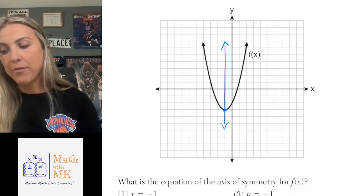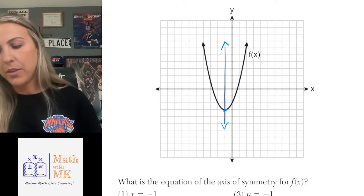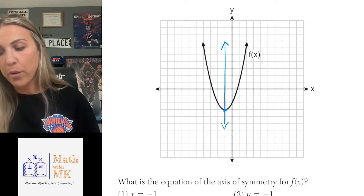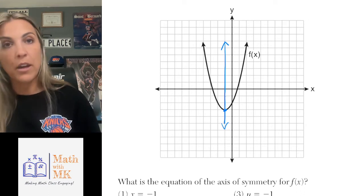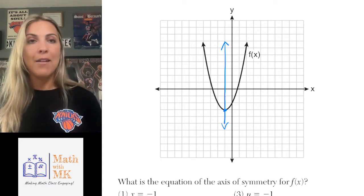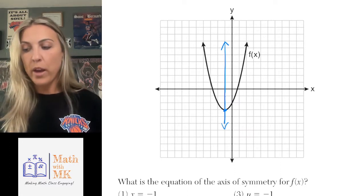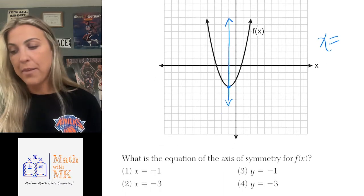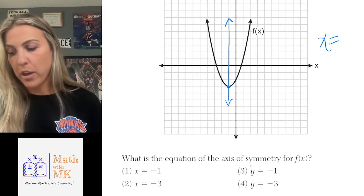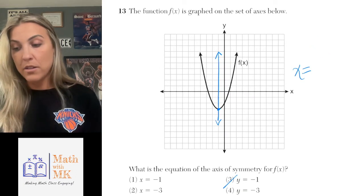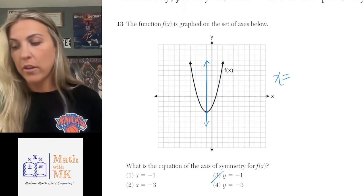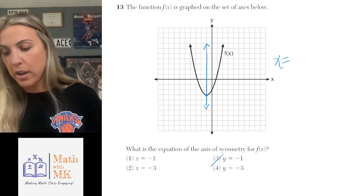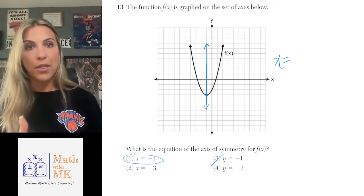Vertical lines all have the same x value. If I look at this blue line and go to the vertex, this is the point negative 1, negative 3. Every vertical line is always going to have the same x coordinate, so the equation of a vertical line is always x equals some value. That's going to help me eliminate answer choices 3 and 4 right off the bat because those are horizontal lines. My blue line goes through all points where x is negative 1, so number 1 is our answer choice.